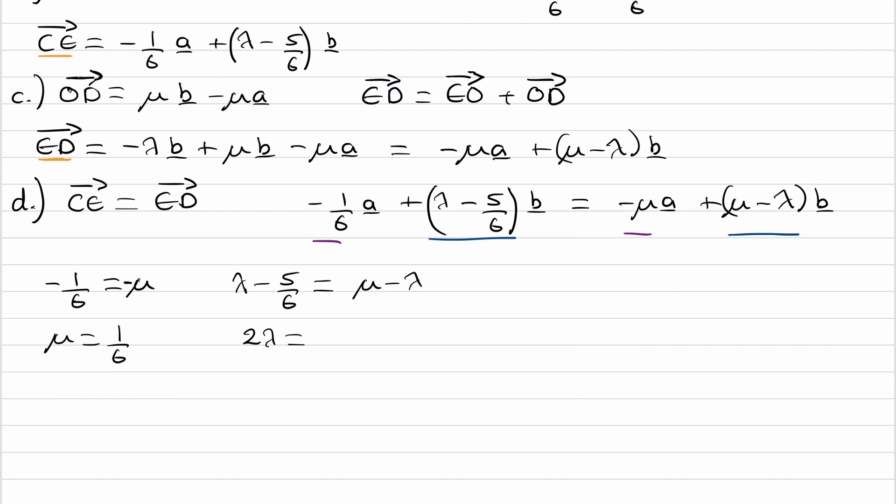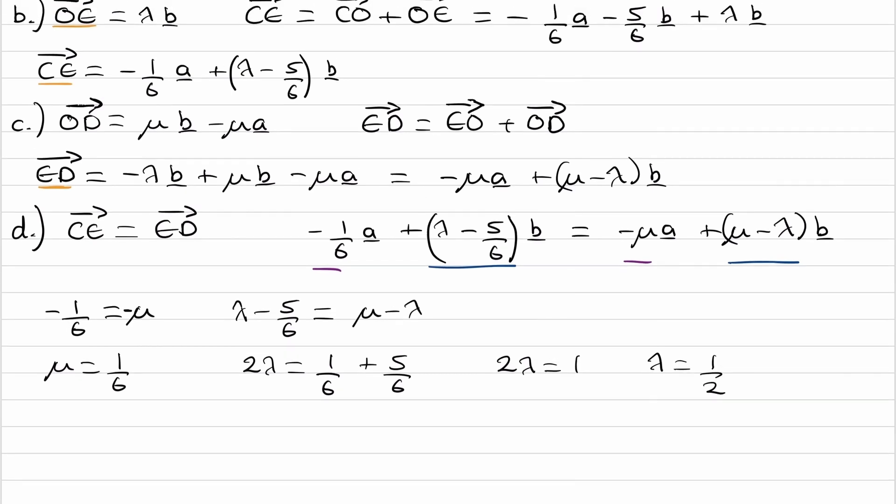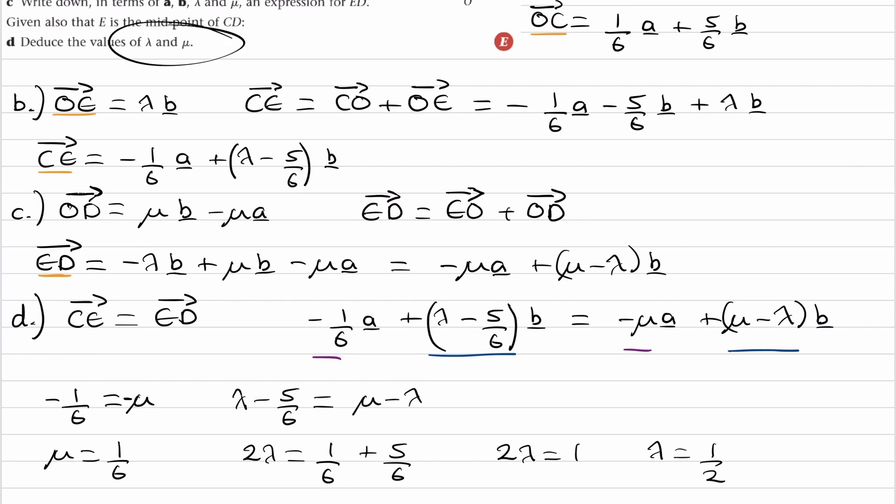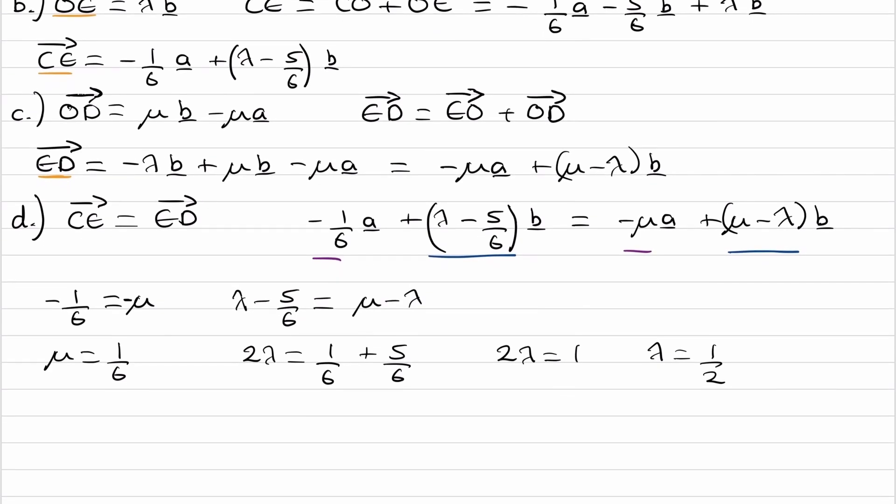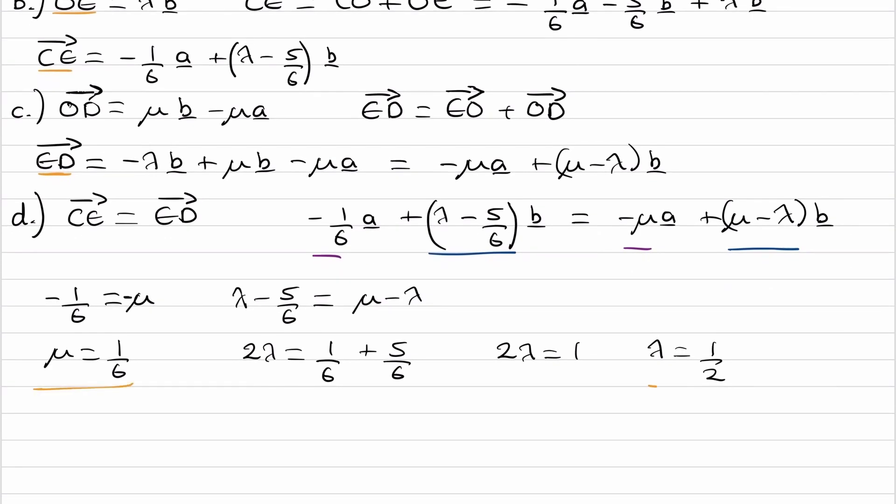We end up with two lambda is equal to mu plus five over six. So two lambda is one, and therefore lambda is a half. We're trying to work out what lambda and mu are, so we have done that now. So mu is a sixth, and lambda is one over two.